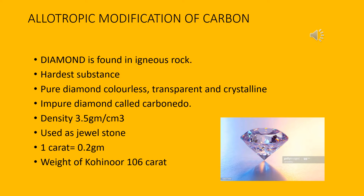Now, allotropic modification of carbon. The first one is diamond. Diamond is a crystalline allotropic modification of carbon. Diamond is one of the hardest substances known. Pure diamond is colourless, transparent and crystalline substance.